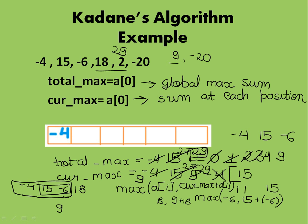And since we have traversed the whole array, the final value is 29 of total_max. So here is the answer.